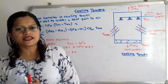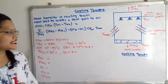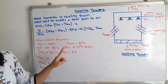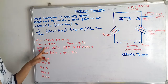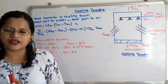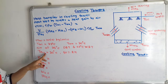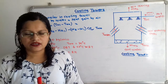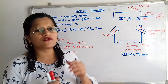Let us first understand the given data. Mass of water entering inside the cooling tower is 1000 kg per minute. Inlet water temperature is 35°C and outlet water temperature is 30°C. Air from the atmosphere is at 35°C dry bulb temperature and 25°C wet bulb temperature. The air leaving the cooling tower has temperature TA2 equal to 30°C and 90% relative humidity.